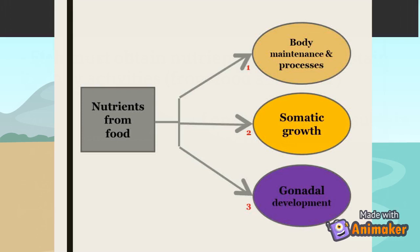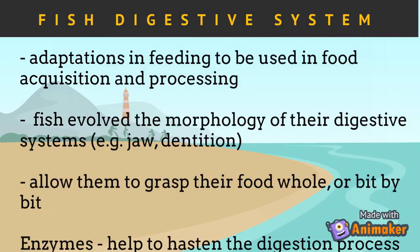After energy requirements for body processes and maintenance are met, some energy will be used for fish growth. If there is enough energy left, it will be used for gonadal development and reproduction. Fish have different adaptations in feeding for food acquisition and processing. Fish evolve the morphology of their digestive systems, such as the presence of jaws and dentition, which allow them to grasp food whole or bit by bit. Enzymes are also produced to act quickly in digesting food particles.